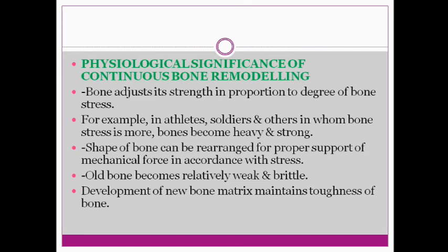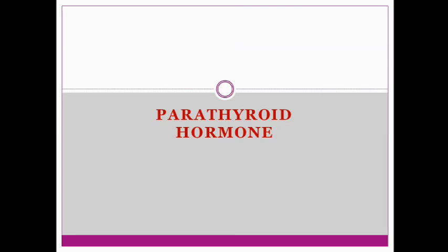So this is the bone physiology covering different types of cells and the different mechanisms of bone growth and bone remodeling. The hormonal part will be taught in the next class, where we will study the three different hormones involved — parathyroid hormone, active vitamin D, and calcitonin. Thank you for today and we will proceed to the next topics in the next class.